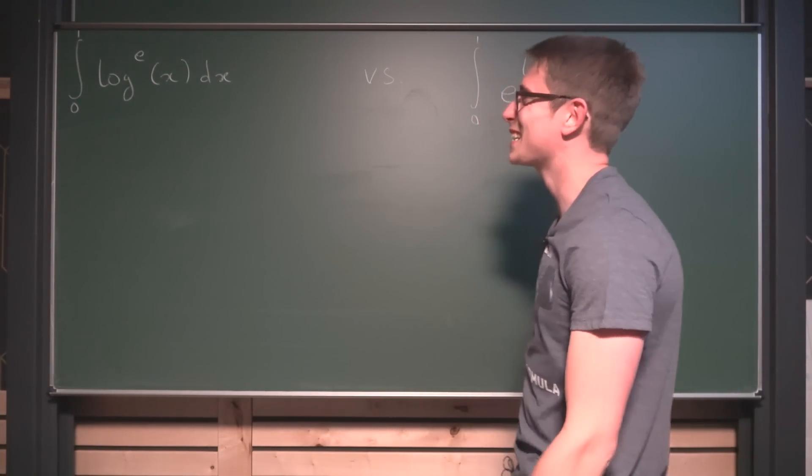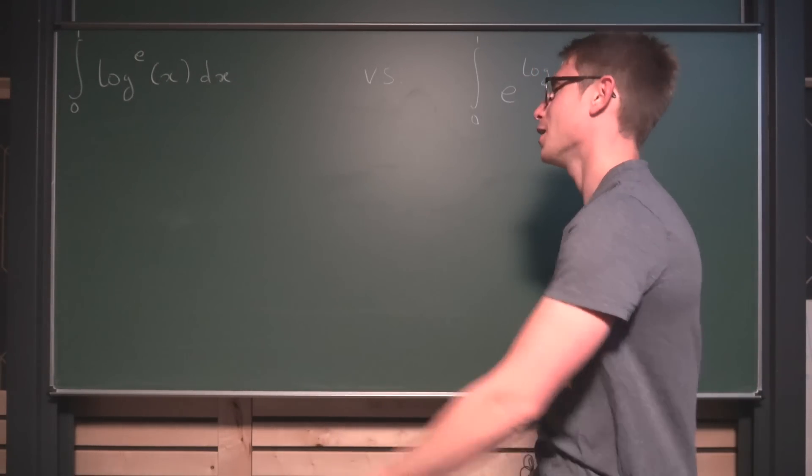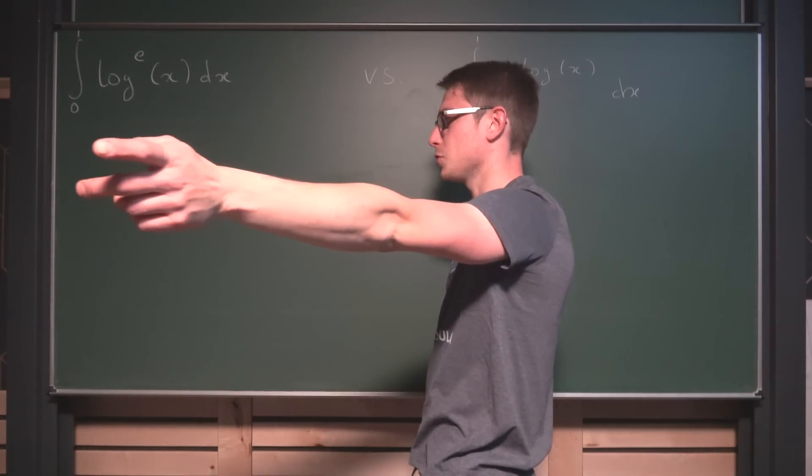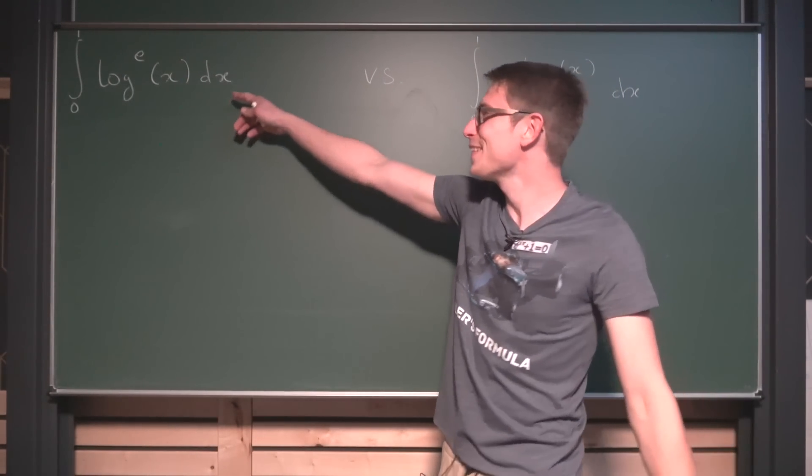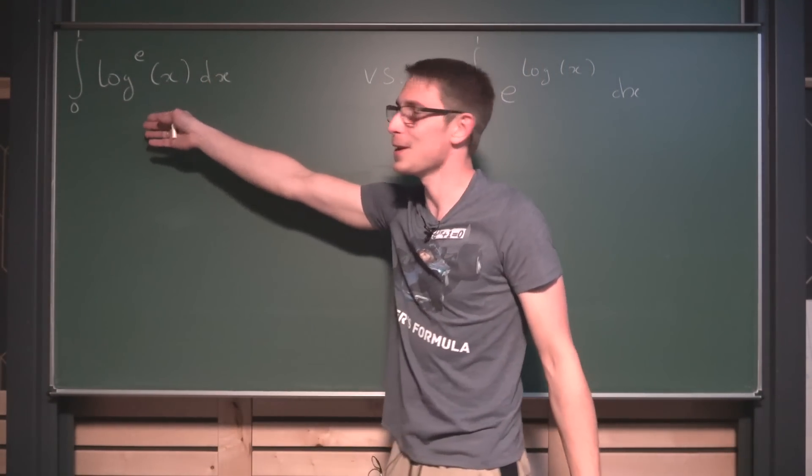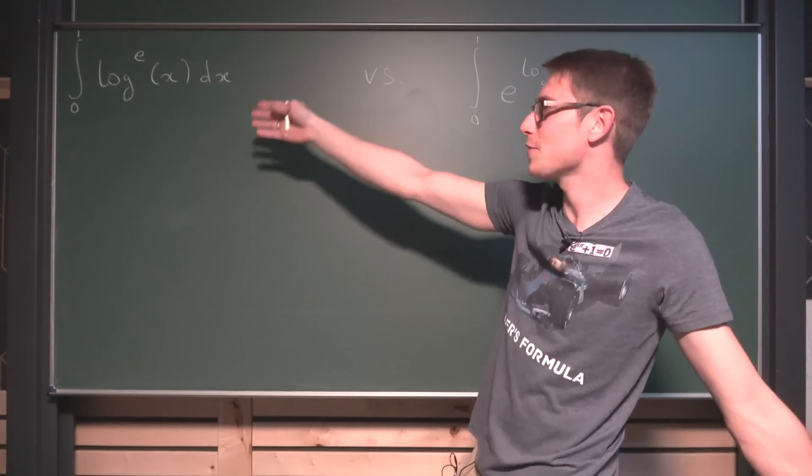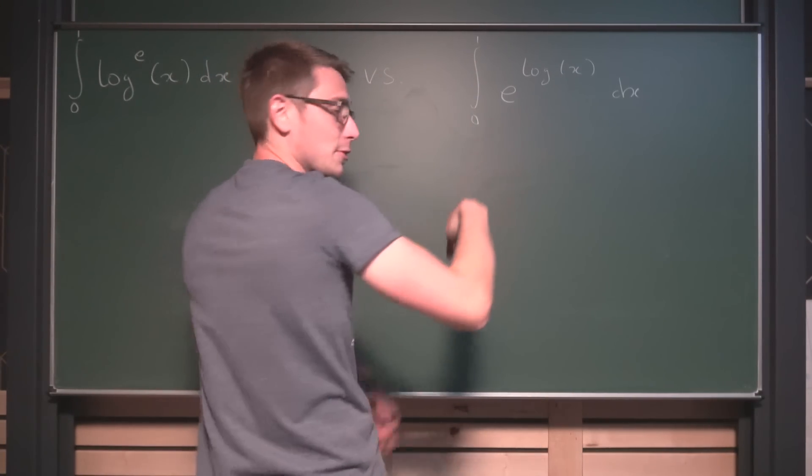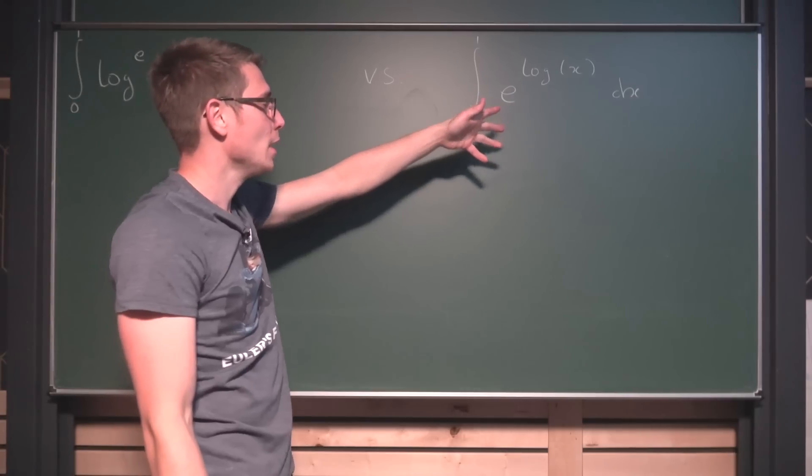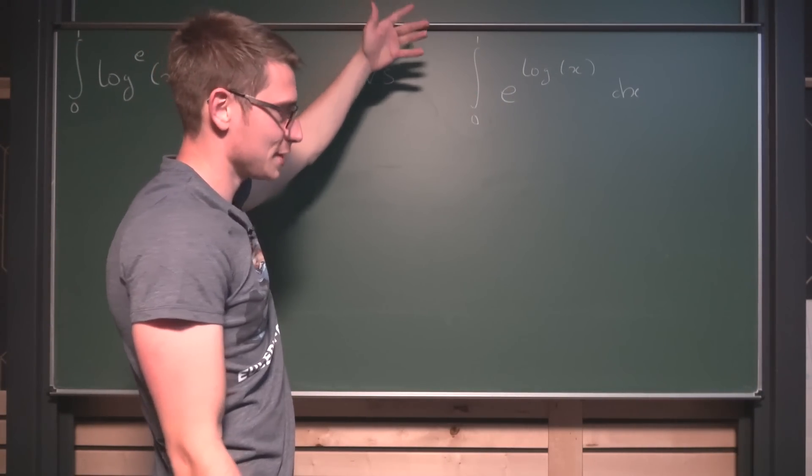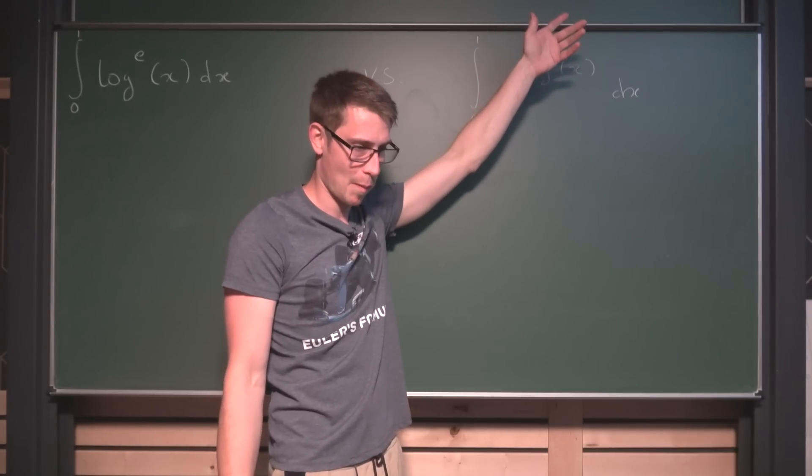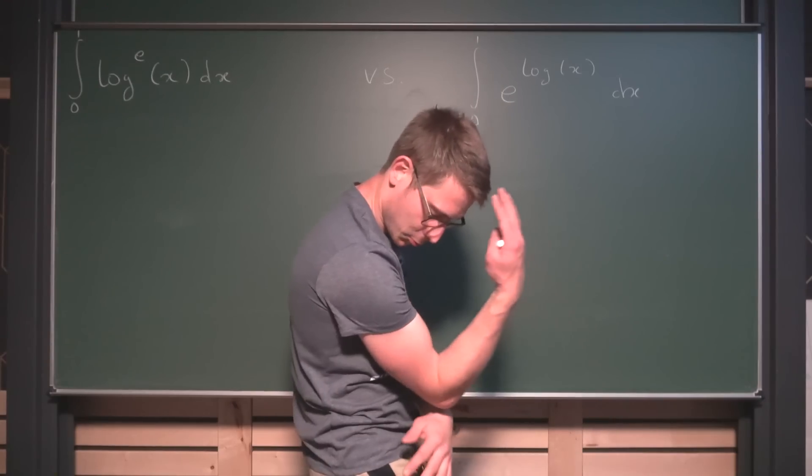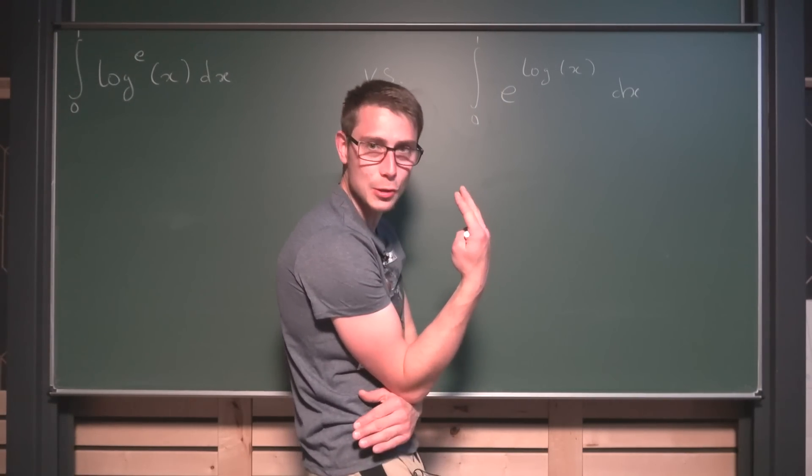Today a little integral competition. On the left-hand side, this is the left-hand side for you too, on the right-hand side we got the integral from 0 to 1 of log to the e power of x dx and on the left-hand side, which is your right-hand side, but on the left-hand side to confuse you, we got the integral from 0 to 1 of e to the log of x dx. Which one is easier? Which one can you figure out? Try it out and keep watching the video for the solution.